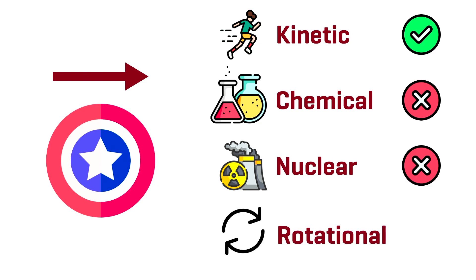Is the shield rotating when it's moving through the air? Yes, it absolutely is — we've seen that in the films. It definitely rotates, which means it has rotational energy. Rotation is super important for the motion of the shield when it's thrown.